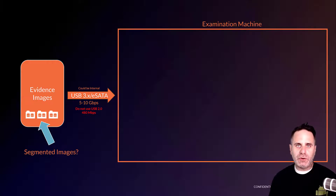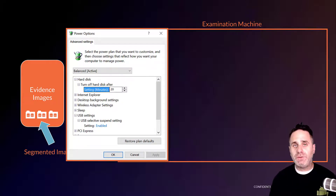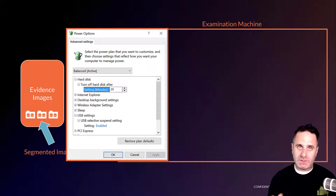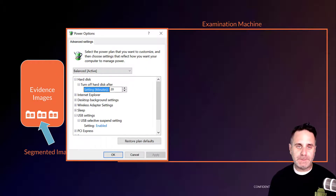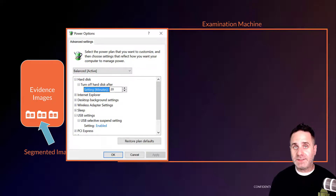One thing to consider when using external drives is to adjust your device's power settings. You do not want to have the hard disk set to turn off after a certain amount of time, and also under your USB settings, disable the selective suspend setting so that the port is not turned off while processing. That will cause the processing job to fail when the device is either turned off by power settings or the port itself is disabled.